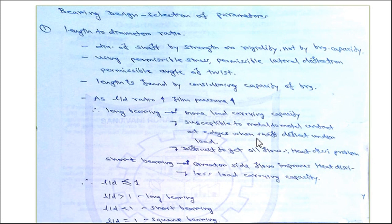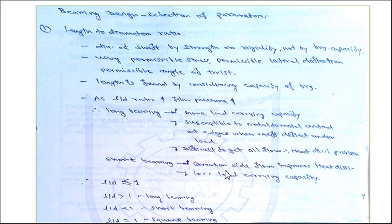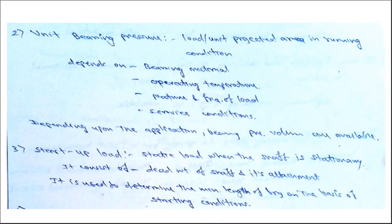A long bearing has more load-carrying capacity compared to short or square bearings, but it is susceptible to metal-to-metal contact at the edges when the shaft deflects under load. It is also difficult for oil to flow from the center to the sides, causing heat dissipation problems. In contrast, a short bearing has greater side flow which improves heat dissipation, but it has less load-carrying capacity.